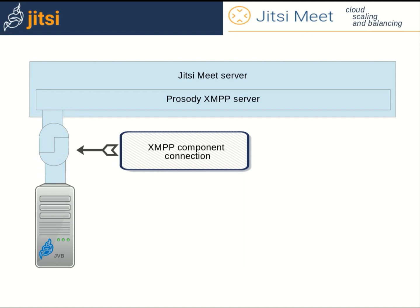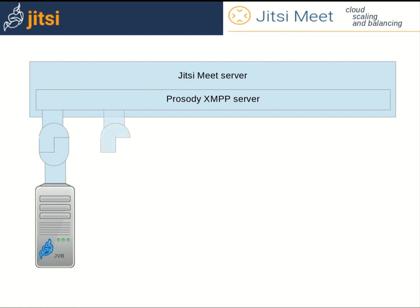Now let's talk more about the video bridge scaling, because it's one of the two most important things here, the other being the HAProxy balancing. We have a separate video tutorial for load balancing the video bridges, where you can get all the Linux configuration details. Each video bridge is connected to the Prosody server as an XMPP component. To get a second video bridge, you need to make a second component connection. This means that in Prosody there must be another component configuration waiting for connection from outside. The video bridge authenticates with a password and starts to serve as a component. Although all the video bridges are the same and do exactly the same work, they can't share one component configuration.